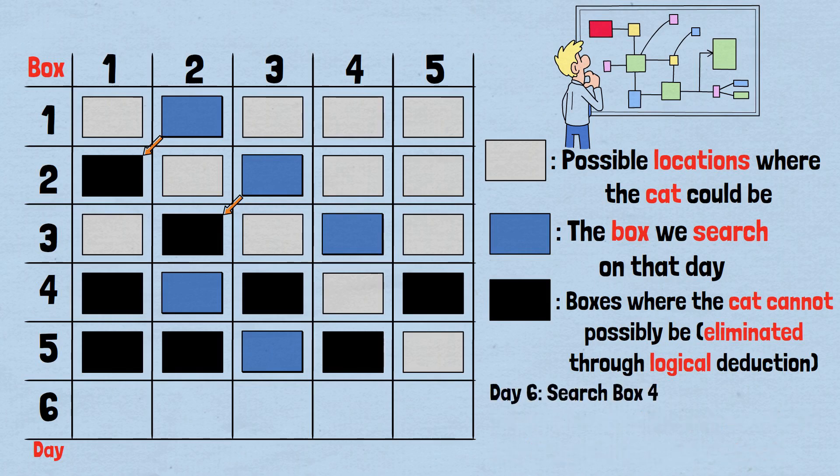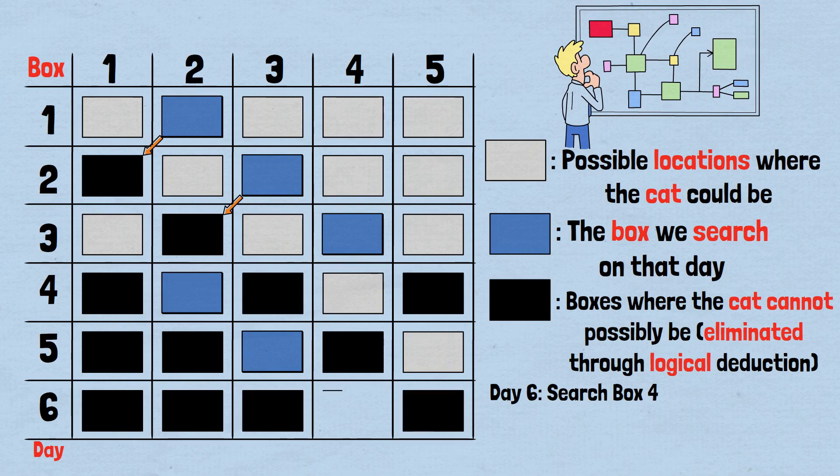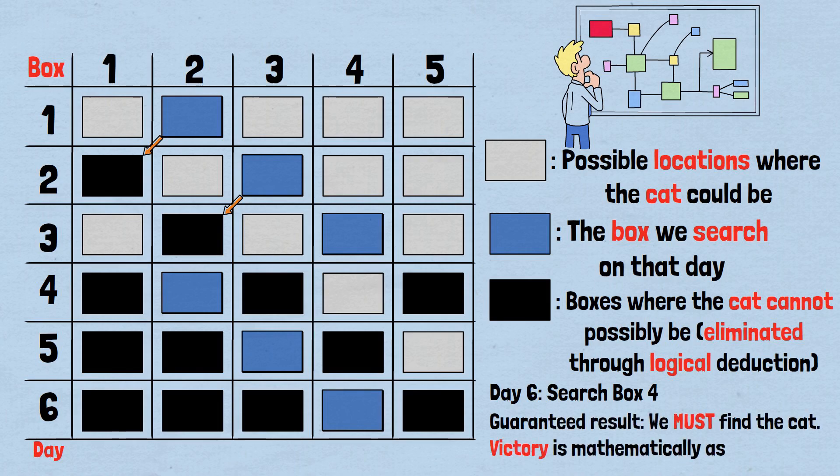Day 6: Search box 4. Mathematical certainty: The cat was in box 5 yesterday and can only move to box 4. Grid status: Only box 4 is gray. It's the only possible location. Our search: We check box 4, blue. Guaranteed result: We must find the cat. Victory is mathematically assured.